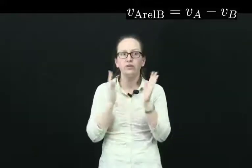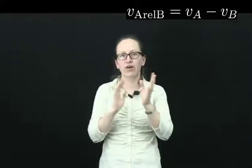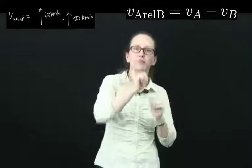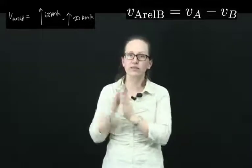So in this example, you're in car B. You want to work out the velocity of A relative to you. That's the velocity of A, which is 60 kilometers per hour in the same direction you're traveling, minus your velocity, which is 50 kilometers per hour.